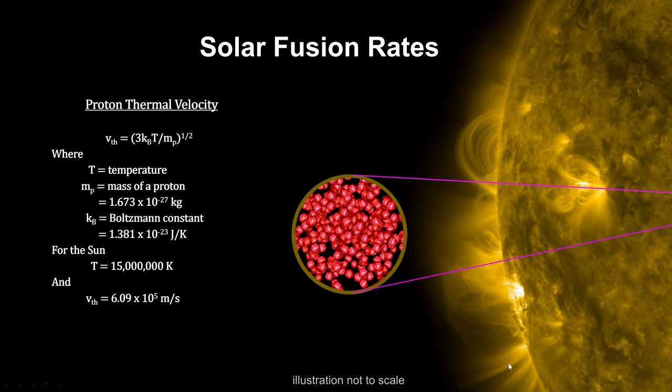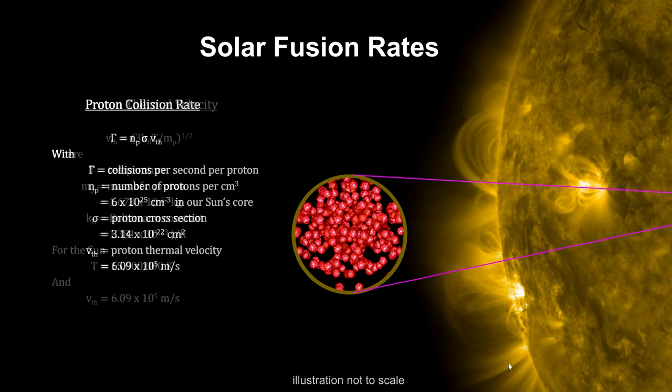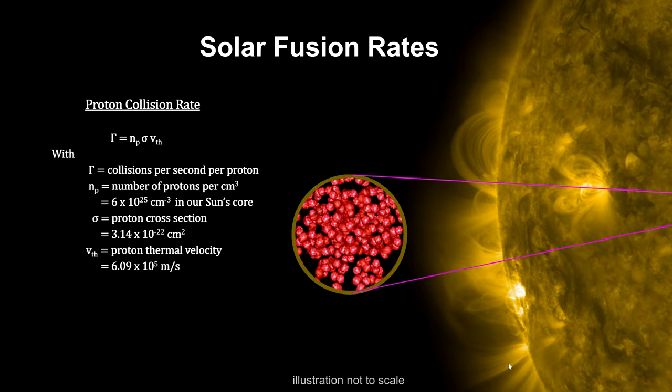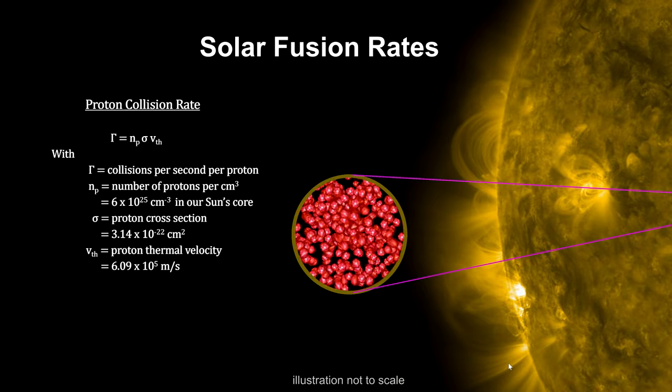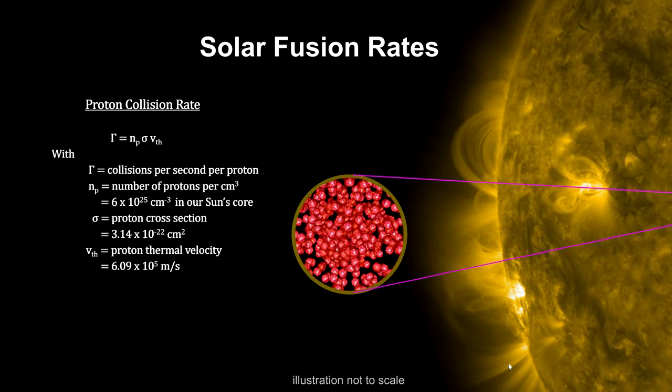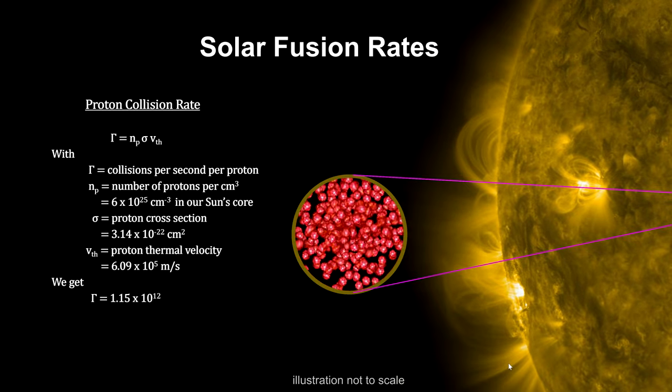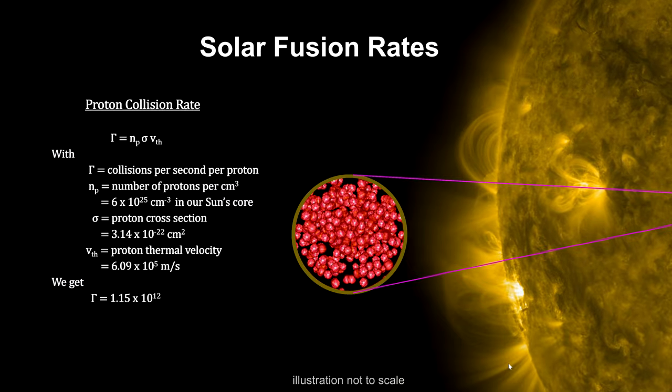With this, we can calculate the number of times a proton will collide with another proton. The number depends on the proton density, cross-section, and thermal velocity. We cover cross-section in the How Small Is It video book. It represents the target area for determining a collision versus a miss. We calculate that each proton experiences over one trillion collisions per second.